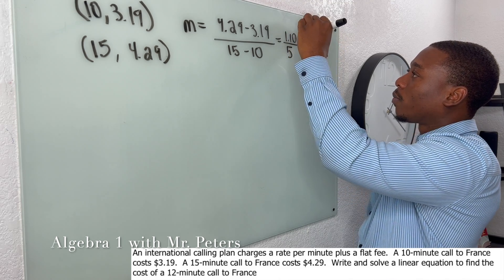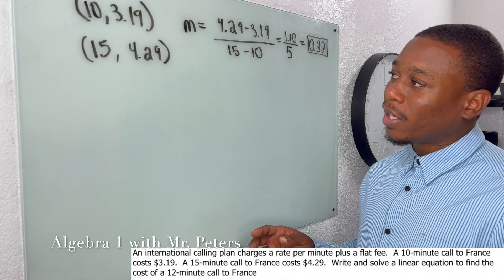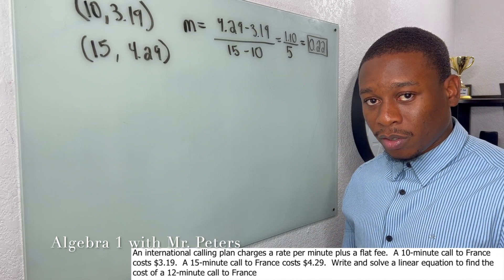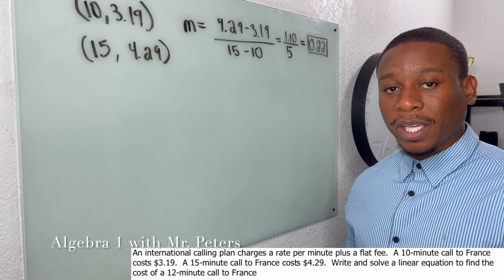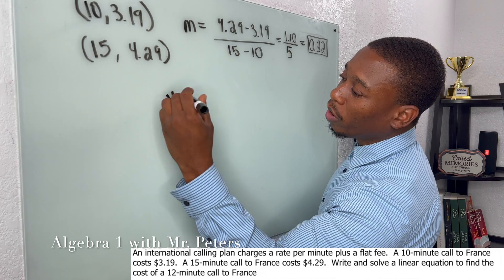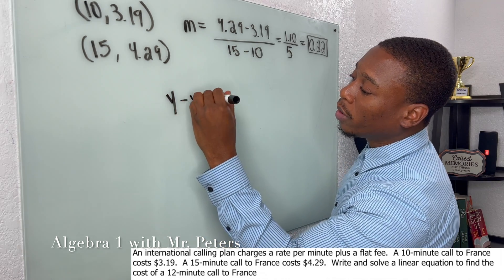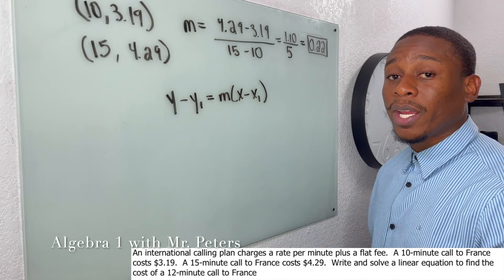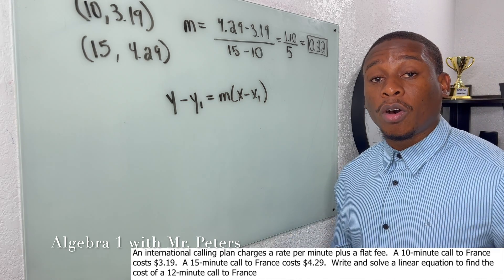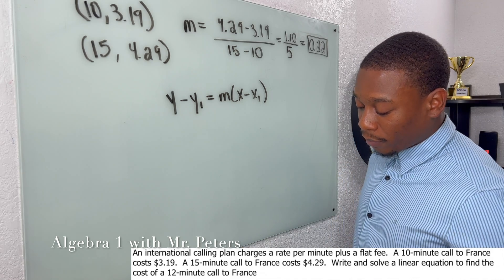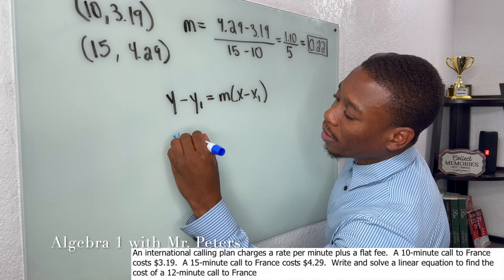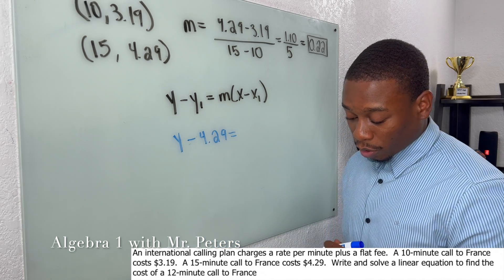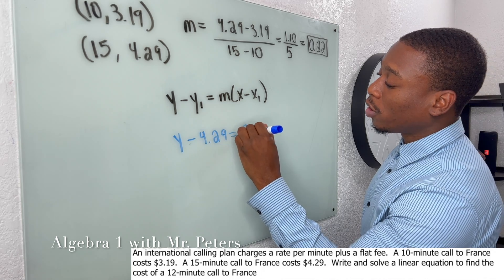Once we simplify, we get 1.10 divided by 5, which gives us a rate of change of 0.22. We had to find this because dividing the dollar amounts by the minutes directly gave us two different answers. Now for the second part of the problem, we use the point-slope formula: y − y₁ = m(x − x₁). We set up: y − 4.29 = 0.22 times (x − 15).